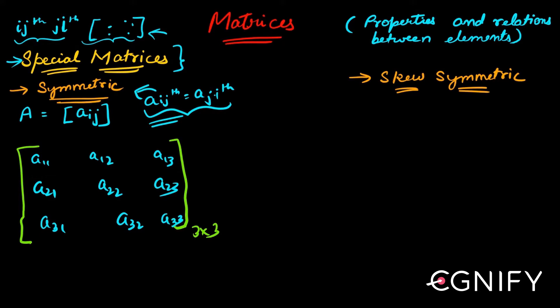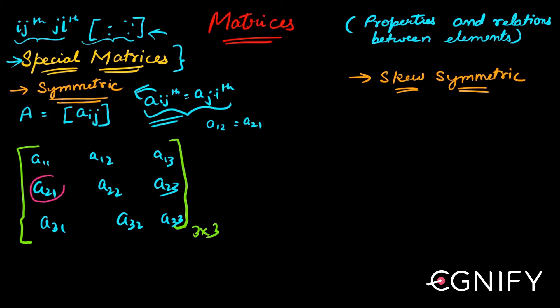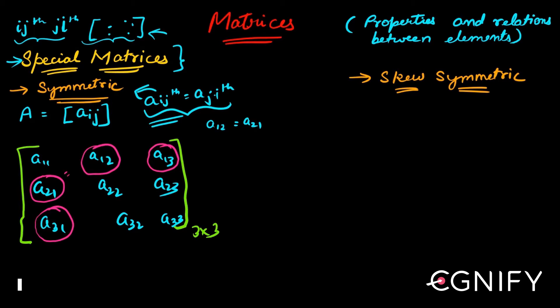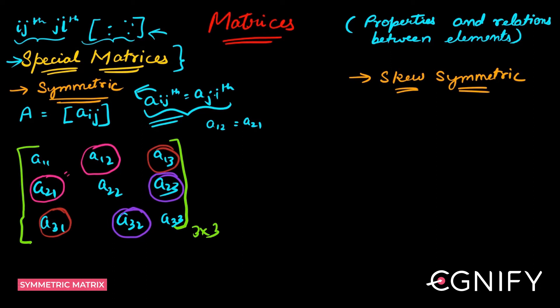Now every Aij element should be equal to every Aji element. So if I take an element, for example A12, that should be equal to A21. Looking at this matrix, A21 should be equal to A12, because every Aij element should be equal to Aji. A31 should be equal to A13, and A32 should be equal to A23.